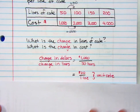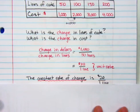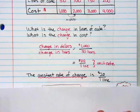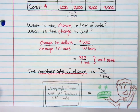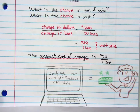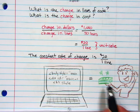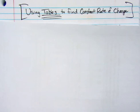So that's what he's going to be charging — $20 per line. That is our constant rate of change: $20 a line. So as he creates programming code, that's going to equal dollars for him, and he's going to charge $20 per line. This is how we use tables to find constant rates of change.